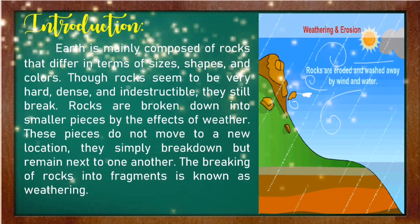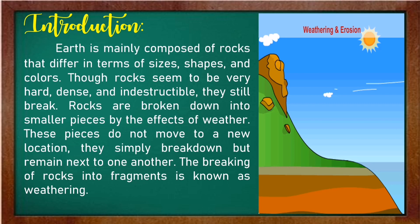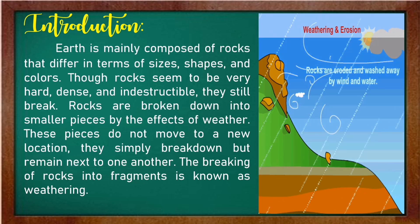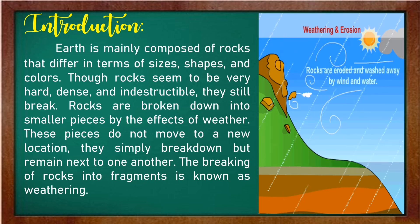Earth is mainly composed of rocks that differ in terms of sizes, shapes, and colors. Though rocks seem to be very hard, dense, and indestructible, they still break. Rocks are broken down into smaller pieces by the effects of weather. These pieces do not move to a new location — they simply break down but remain next to one another. The breaking of rocks into fragments is known as weathering.